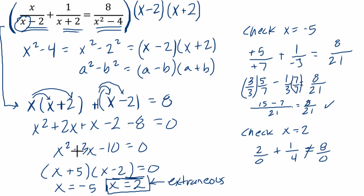So these two balance. In other words, we know that x equals negative 5 works. That's a solution. But x equals 2 is an extraneous solution. All right. I hope this helped.